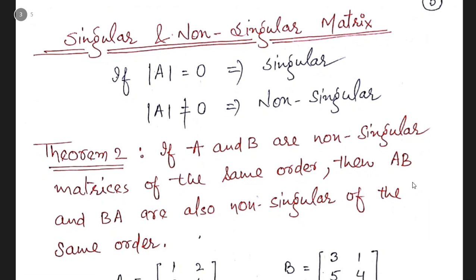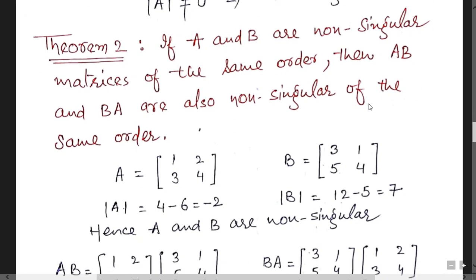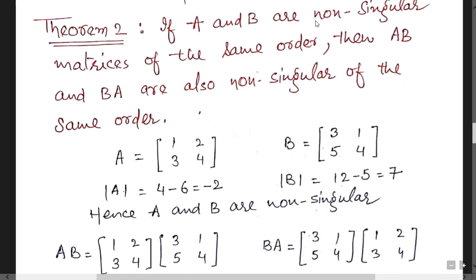The second topic is singular and non-singular matrices, also frequently asked in examinations. If the determinant of a matrix is 0, the matrix is called singular. If the determinant is non-zero, it is called non-singular. The theorem on this topic: if A and B are non-singular matrices of the same order, then AB and BA are also non-singular of the same order — note the order is the same, not necessarily the values.